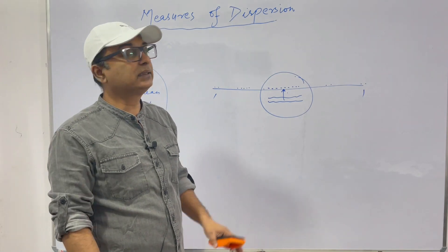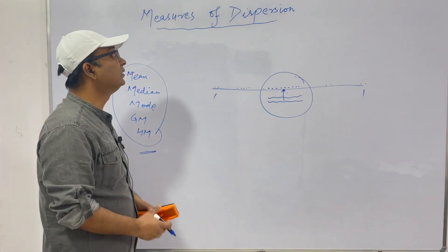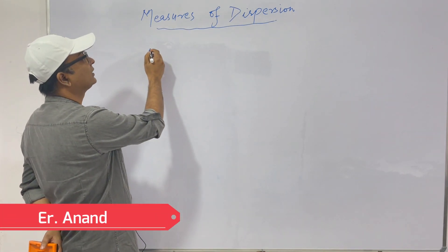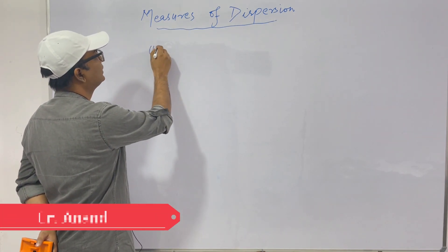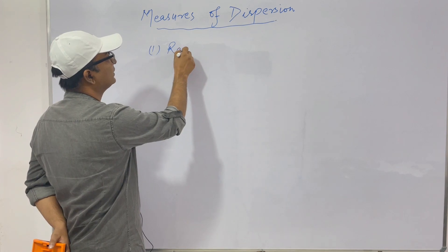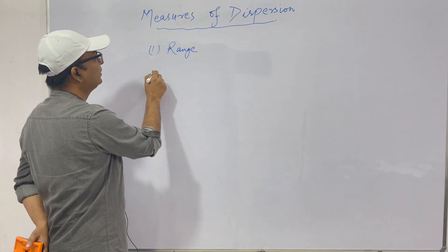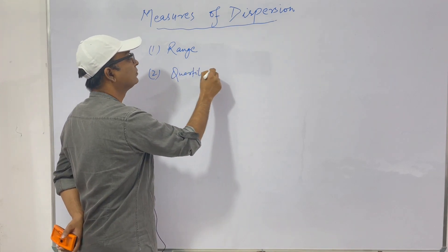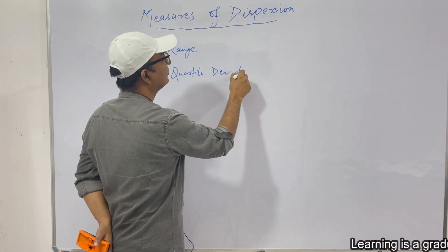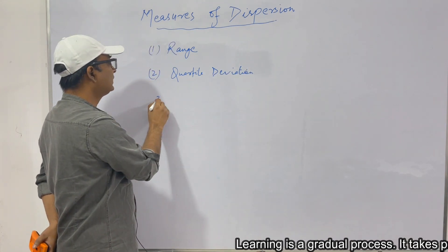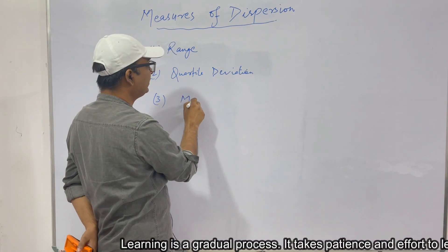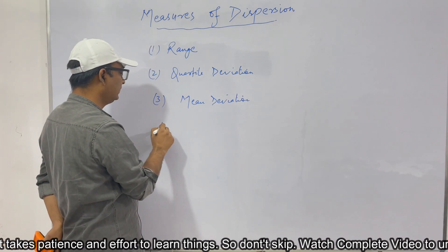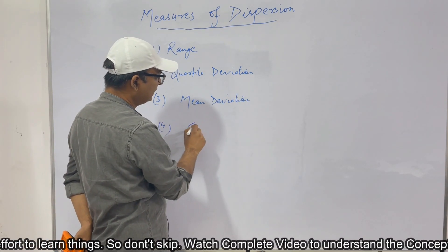What is the scope of our study? First, we will study range. Second, we will study quartile deviation. Third, we will study mean deviation. And finally, we will study standard deviation.